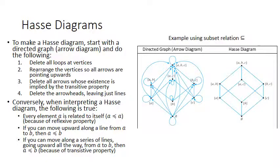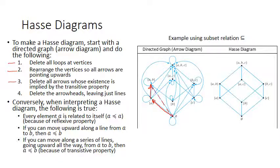To make a Hasse diagram from a directed graph: (1) Delete all loops at vertices. (2) Rearrange vertices so all arrows point upward (at least slightly). (3) Delete all arrows whose existence is implied by transitivity — for example, if A→B and B→C, then the arrow A→C is implied and can be removed. (4) Delete all arrowheads, leaving just lines. The result is a much simpler graph.